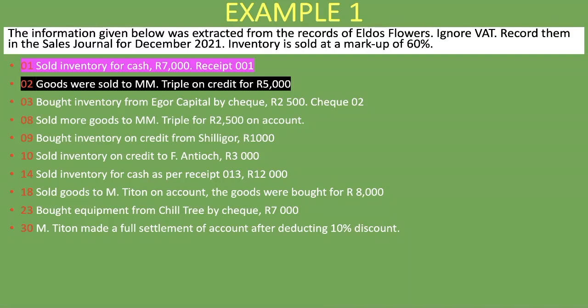On the 3rd of the month, we bought inventory from Ego Capital by cheque, 2,500, cheque 02. We do not put this in the sales journal because we are buying inventory, not selling on credit — so it's highlighted in purple. At this point, you can pause the video and attempt to complete the rest of the question up to the 30th, then come back and compare your answers.